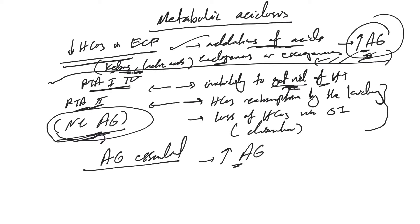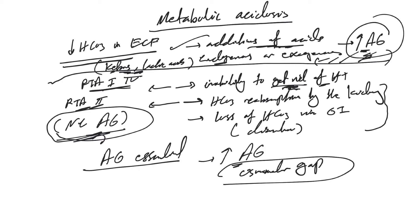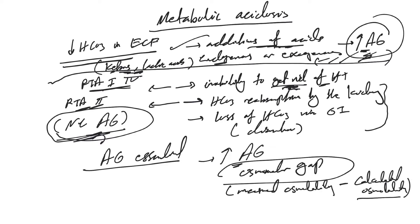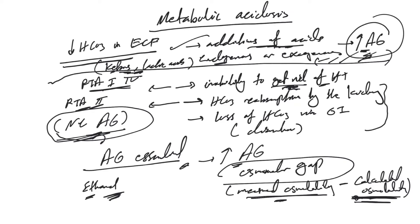When there is an increased anion gap, it's possible to calculate something called the osmolar gap. The osmolar gap is the difference between measured osmolality minus calculated osmolality. Calculated osmolality is contributed to by sodium, glucose, and urea. If measured osmolality is bigger than calculated, it indicates other molecules contributing to osmolality — typically ethanol, ethylene glycol. Calculating the osmolar gap along with history and physical makes it much easier to figure out the cause of increased anion gap metabolic acidosis.